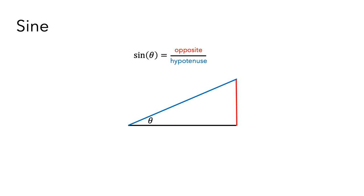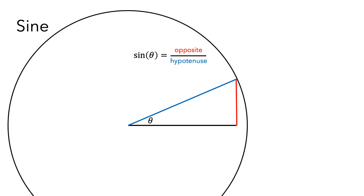To simplify things, we usually imagine that the triangle is embedded in a circle that has radius 1, which makes the length of the hypotenuse equal to 1. And so, sine of theta is just equal to the length of the side of the triangle that is opposite theta.